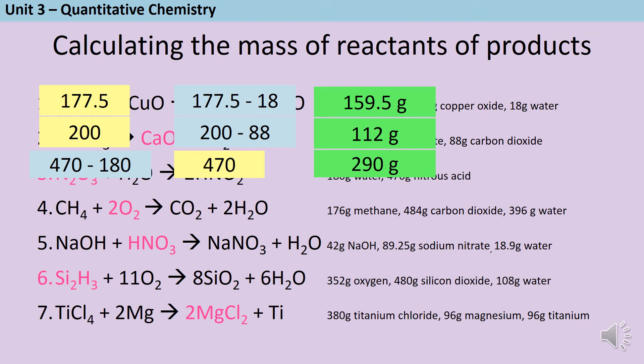In question number four, we need to add together the mass of the carbon dioxide and the water to give a total of 880 and then subtract the mass of the methane on the left hand side to give us a mass of 704 grams.